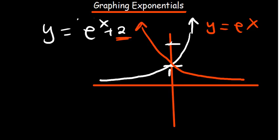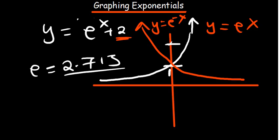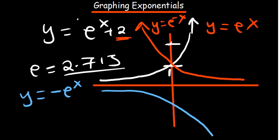And y equals negative e to the power x comes out reflected below the x-axis. That is what you need to understand about the sketching of exponential functions. Working with x values of 0 and 1 will help you sketch any exponential function easily. Thank you very much for watching.